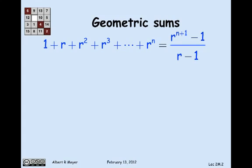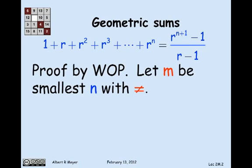So how are we going to prove this? Well, I'm going to prove it by using the well-ordering principle. And let's suppose that this identity didn't hold for some non-negative integer n. So we'll apply the well-ordering principle, and we'll let m be the smallest number n where this equality fails. It becomes an inequality.